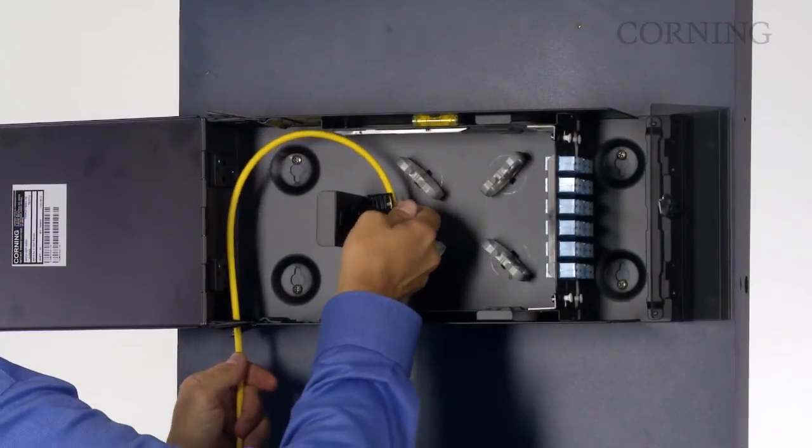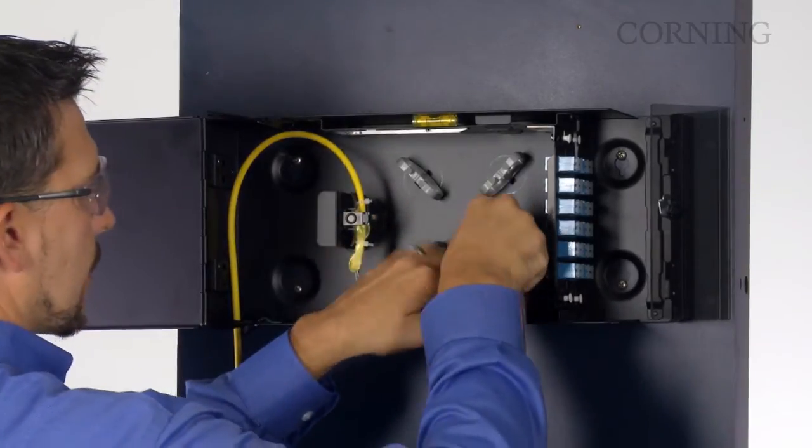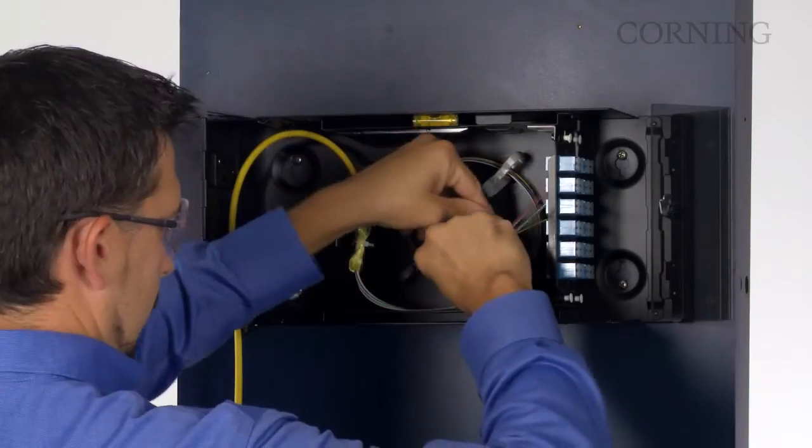Place the strain relief bracket back into the housing, route the fiber inside the routing guides, remove the dust caps, and clean and make connectors to the adapter panel.